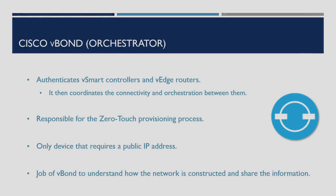We'll now take a look at the vBond component. This is used to bond everything together within the SD-WAN solution, as well as authenticating the vSmart controllers and the vEdge routers that connect to it. From here, it will then coordinate the connectivity and orchestration between them all. It's also responsible for the zero-touch provisioning process and is the only device that requires a public IP address so that all devices can connect to it to communicate with the required components. It's the vBond's job to understand how the network topology is constructed and share this information across the other components. This component can run as a virtual machine on-premise or run as an agent service on one of our vEdge routers.